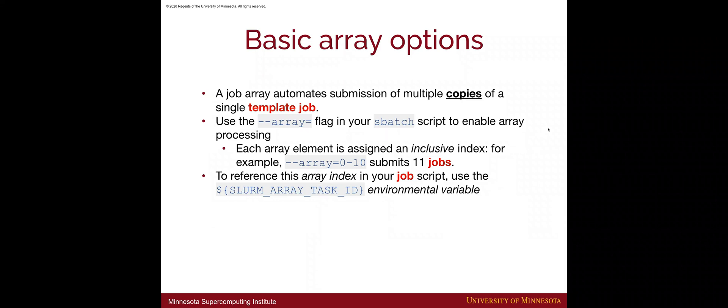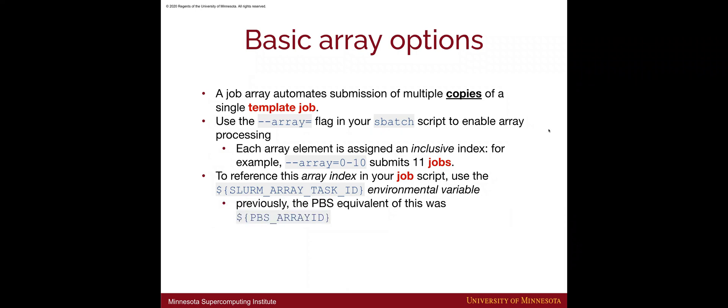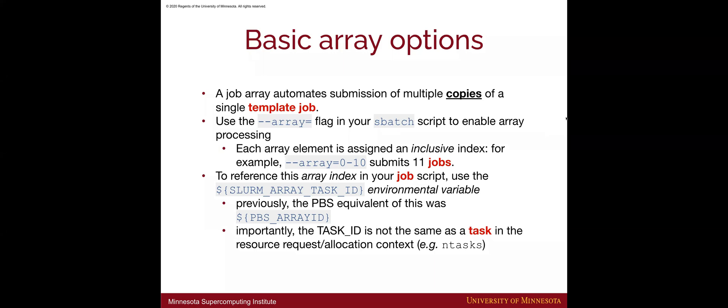You can reference this array index within your job script at any time using an environment variable. Like all environment variables, this is preceded with a dollar sign. In this case it's called SLURM_ARRAY_TASK_ID with underscores. If you used arrays in PBS before the transition to SLURM, the PBS equivalent was PBS_ARRAY_ID. One thing that can be confusing: this task ID is not the same as 'tasks' in SLURM. When you specify ntasks for your overall job allocations, that is not the same terminology — so keep that in mind when using this environment variable.